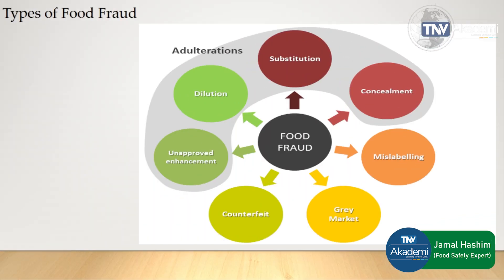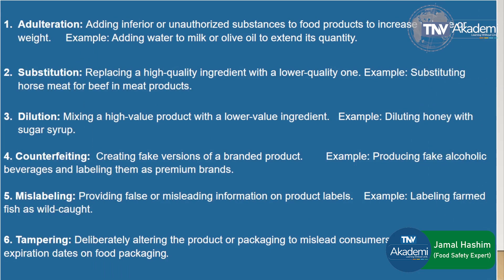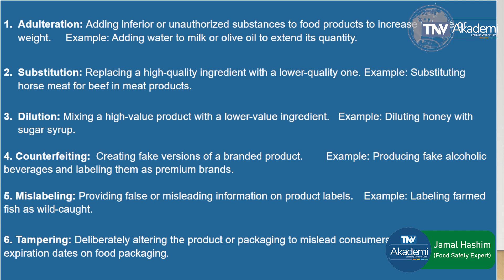Types of food fraud include dilution, substitution, concealment, mislabeling, gray market, counterfeit, and unapproved enhancement. Number one, adulteration: adding inferior or unauthorized substances to food products to increase volume or weight — for example, adding water to milk or olive oil to extend its volume. Number two, substitution: replacing a high-quality ingredient with a low-quality one — for example, substituting horse meat for beef in meat products. Number three, dilution: mixing a high-value product with a low-value ingredient — for example, diluting honey with sugar syrup.